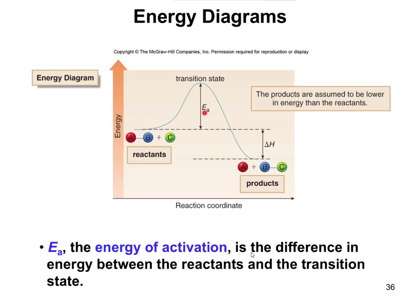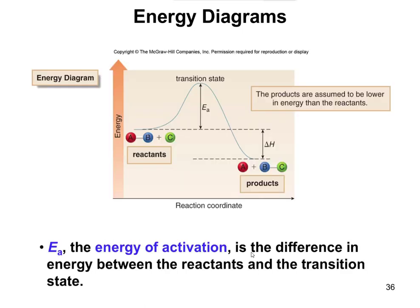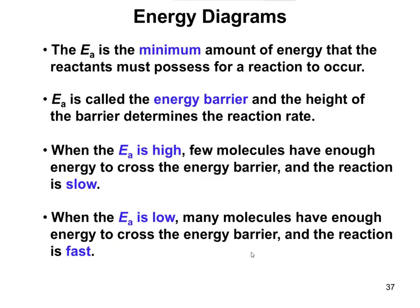That amount of energy to get over the hill we refer to as the activation energy, or EA. The energy of activation is the difference between the reactants and the transition state. Delta H is the difference between the products and the reactants. Activation energy is the minimal amount of energy the reactants must have for a reaction to occur, and it acts as an energy barrier — the height of that barrier determines the rate of the reaction.